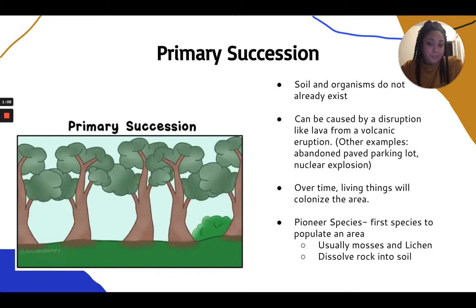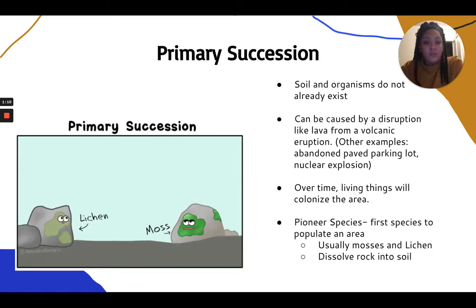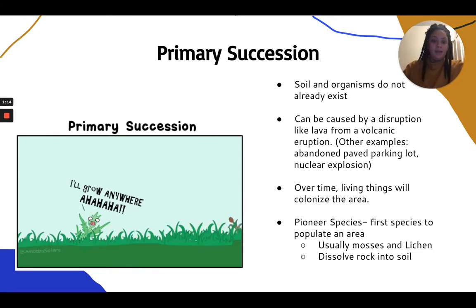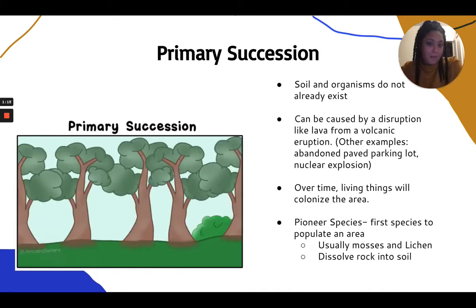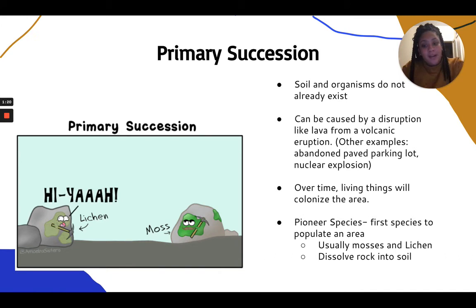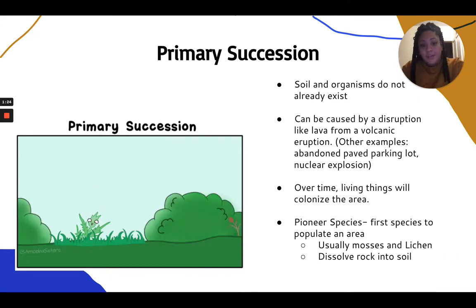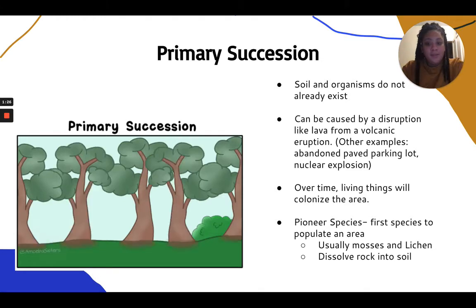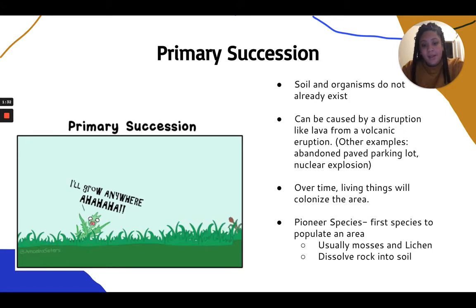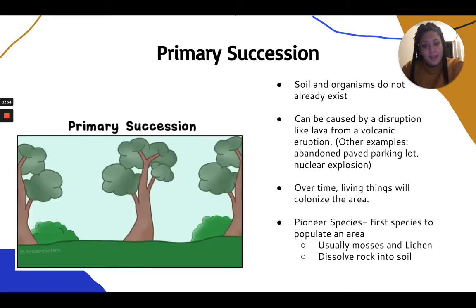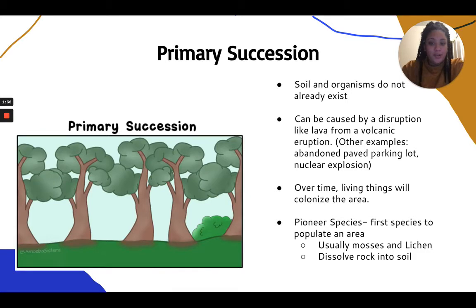Over time, this bare rock will become a huge community where living things will be able to colonize the area. The first species to populate an area is called a pioneer species. Pioneer species are the first to get there and the first to start breaking down that rock — it's usually mosses and lichen, and they're able to break down rock into soil and start the process.